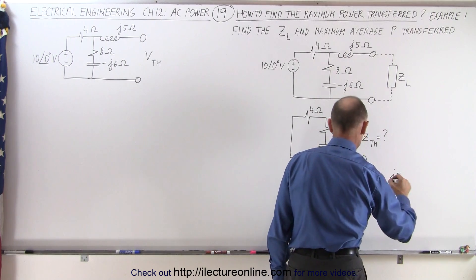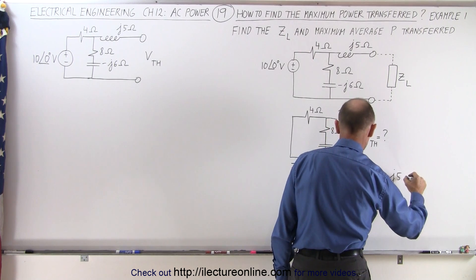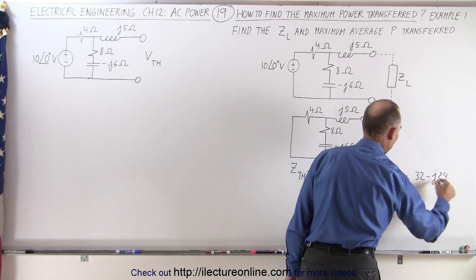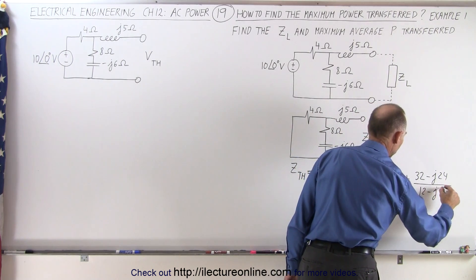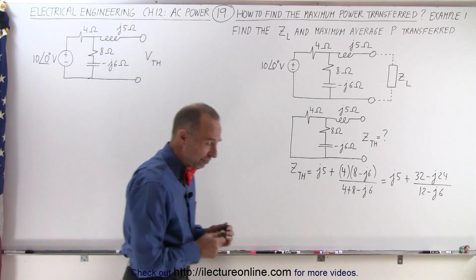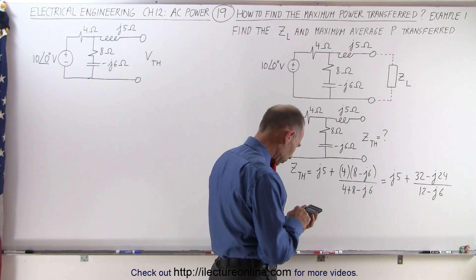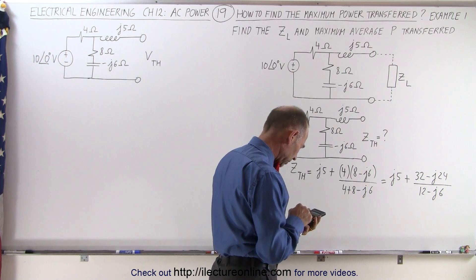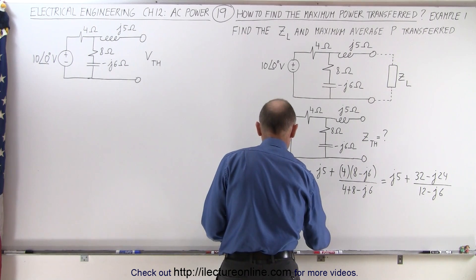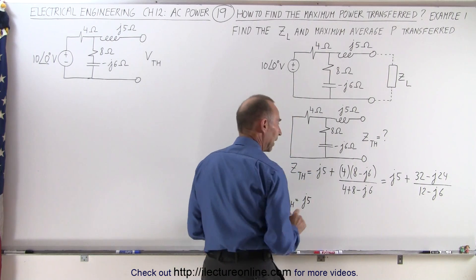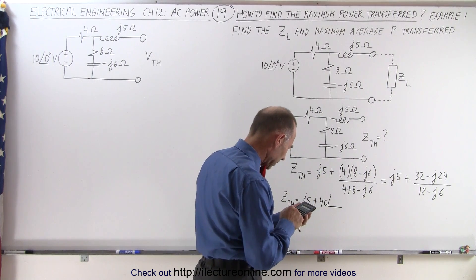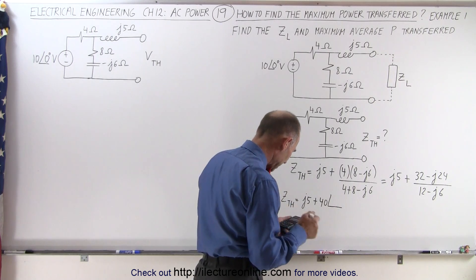Now we have to simplify that. This is equal to J5, and in the numerator we get 4 times 8 which is 32, and 4 times negative j6 which is minus j24, all divided by 12 minus j6. I think what I need to do now is first convert to magnitude and phase angle format. So 32 squared plus 24 squared gives 1600; take the square root of that, which would be 40.